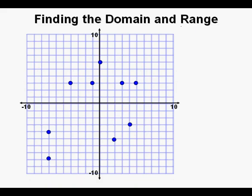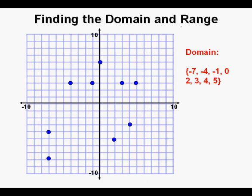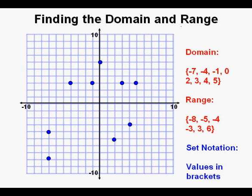Let's take a look at this relation. We have points scattered throughout all four quadrants. This relation is called a discrete relation because it exists at specific points and does not span intervals. The domain is all the x values of the points and the range is all the y values. Having values in brackets, as shown, is called using set notation.